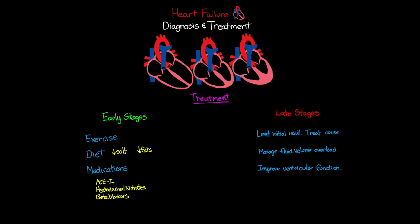To limit the initial insult and treat the underlying cause, we put interventions in place to stop whatever is causing the problem. This includes giving fibrinolytics or going to the cath lab for acute MI. We also look to revascularize patients with persistent ischemia to reduce tissue necrosis, either in the cath lab or via CABG surgery. If there's a valve issue, valve repair or replacement can be done in the OR or increasingly in the cath lab.